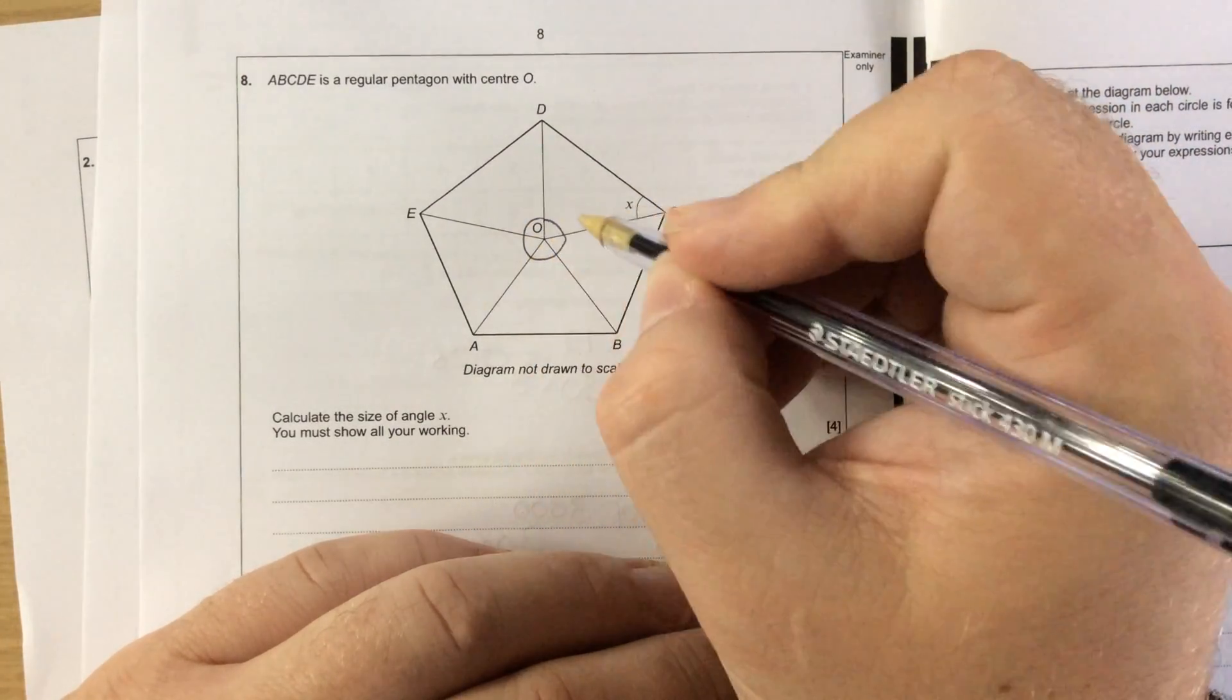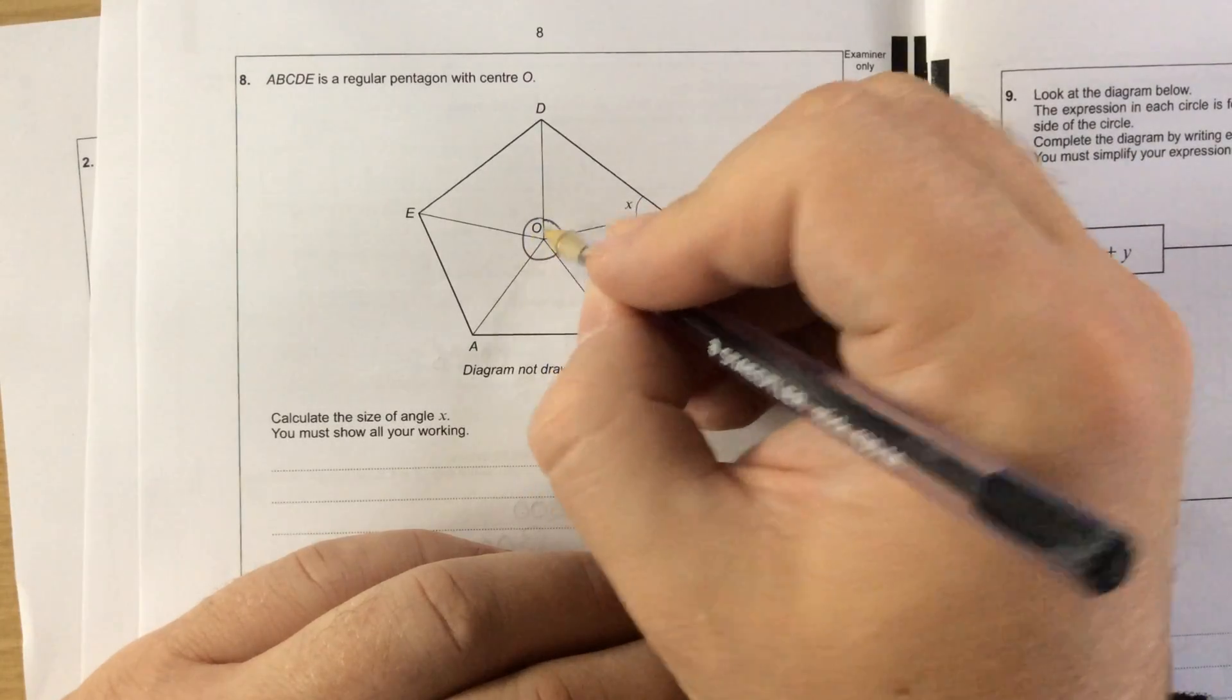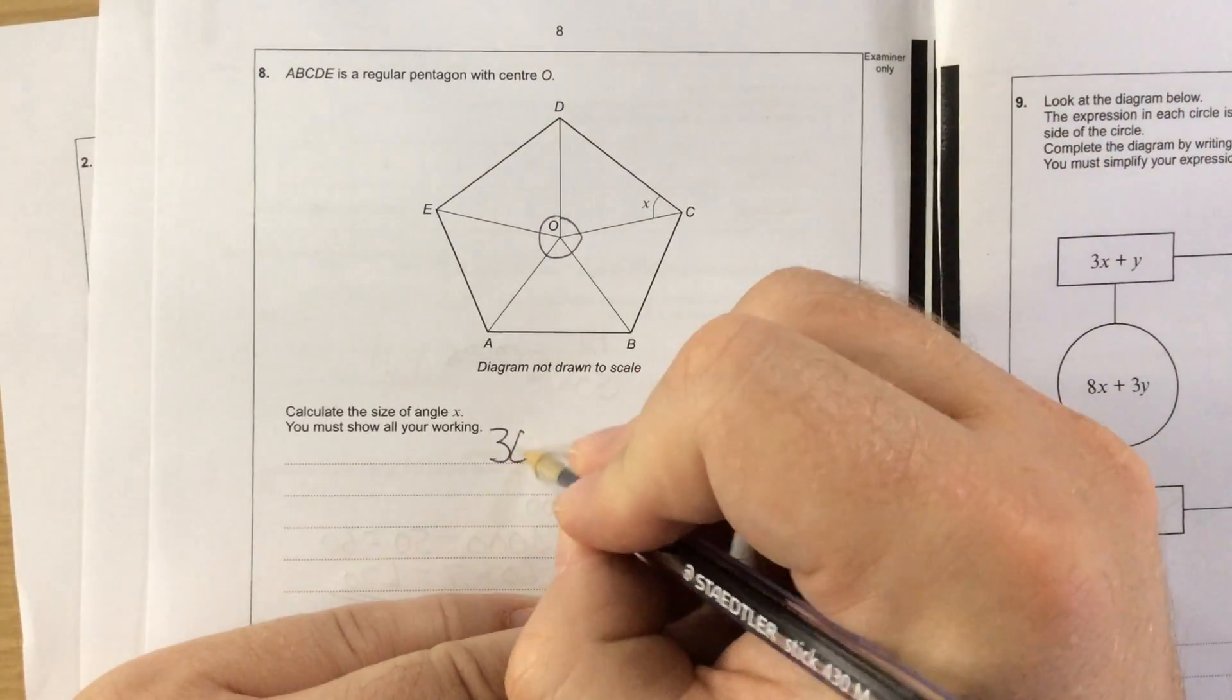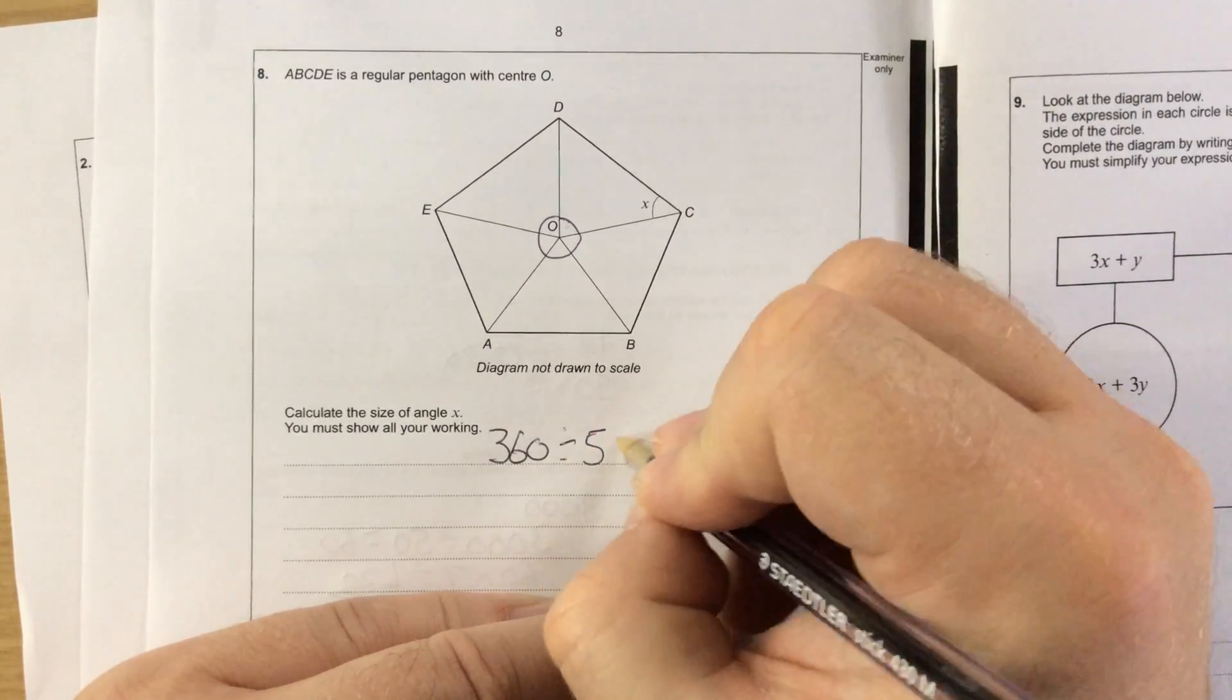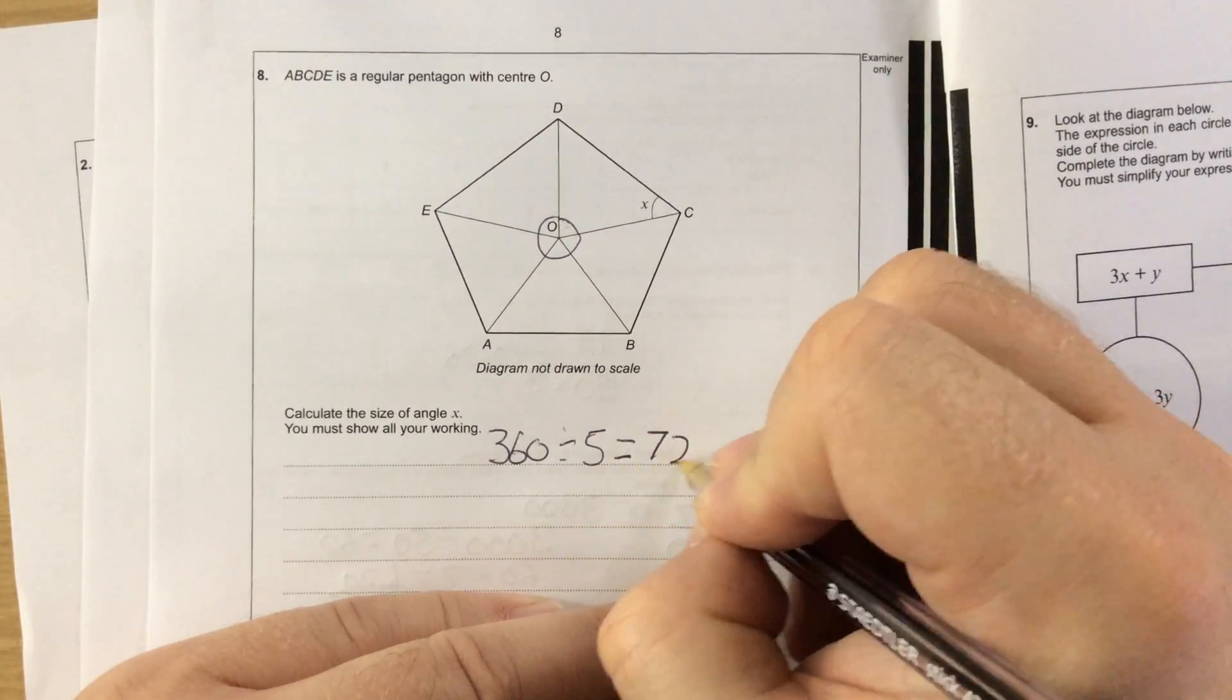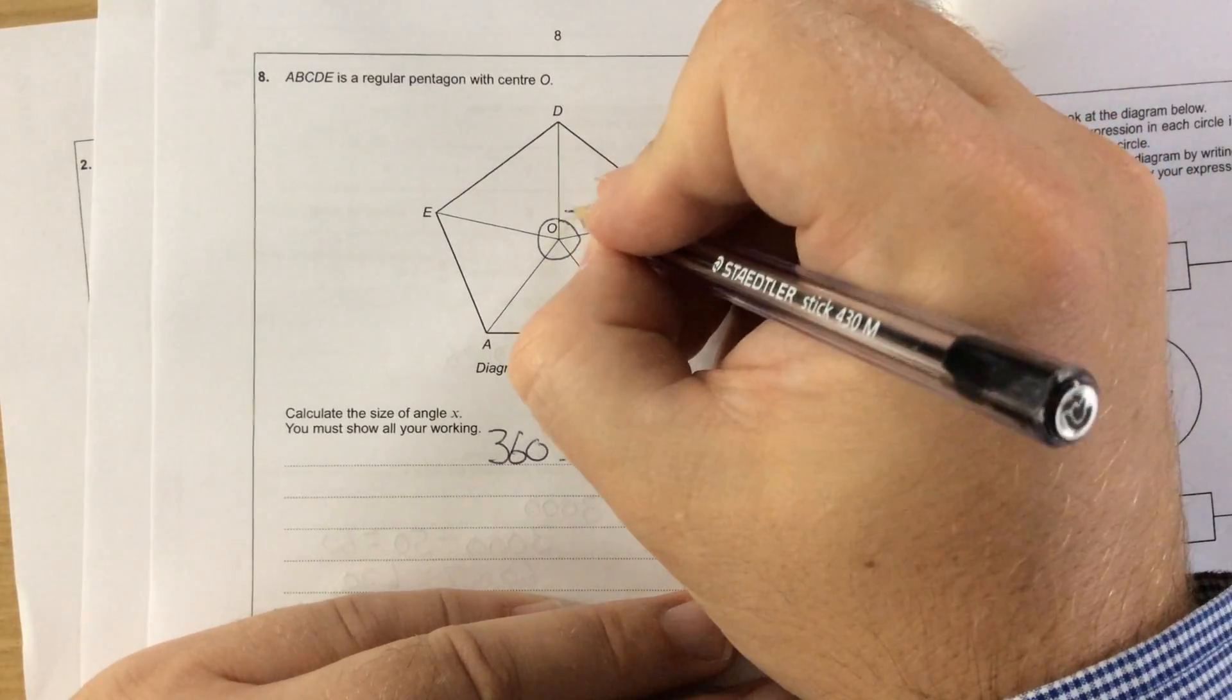You can either find one of the angles in the centre first, and because the angles at the point make 360, each of the central angles is going to be 360 divided by 5, which is 72 degrees.